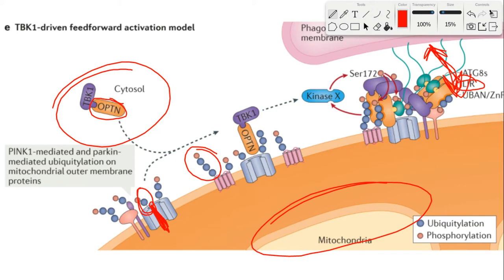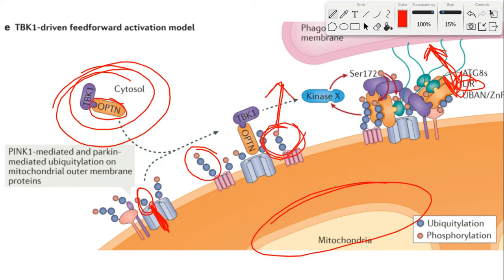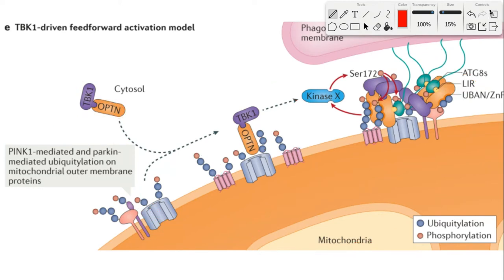Still, there are some big questions. Research suggests that PINK1 overexpression can induce mitophagy even without Parkin, but how that happens is not understood. In addition, the phosphorylated ubiquitin added by PINK1 doesn't appear to be a good substrate for the autophagic cargo adapters — these cargo adapters don't prefer to bind to phosphorylated ubiquitins. So these two ideas are inconsistent with current models of mitophagy, and there's definitely more research that needs to be done to fully understand this process.